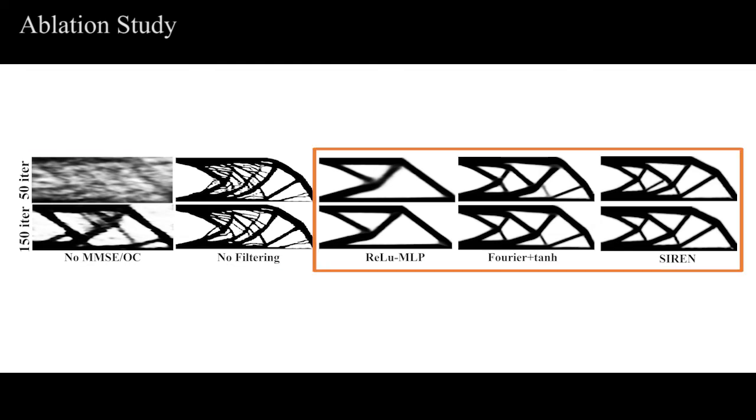We furthermore investigate the impact of using different architectures for the density and displacement networks. In a first test, we replace just the density network and use SIREN for displacements. As can be seen, using a ReLU MLP fails to capture much of the geometric features that our method produces, leading to more compliant, that is less optimal, designs. As another alternative, the Fourier feature network leads to comparable results and is thus also a valid option for our method.